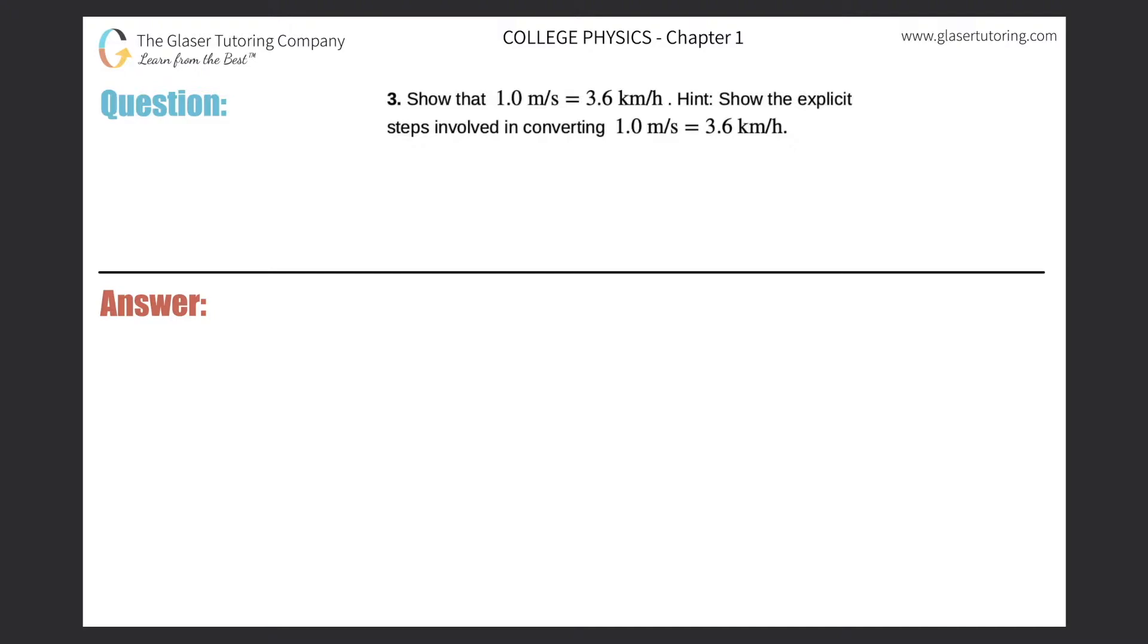Number three: show that 1 meter per second is equal to 3.6 kilometers per hour. Hint: show the explicit steps involved in converting 1 meter per second is equal to 3.6 kilometers per hour. Okay, so basically it's just a very simple conversion.